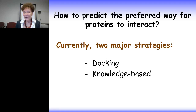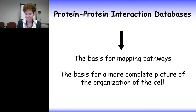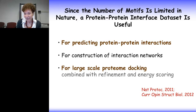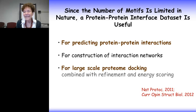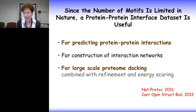The second way is knowledge-based, using protein-protein interaction databases. These databases form the basis for mapping pathways and for a more complete picture of the organization of the cell. Within this, a protein-protein interface dataset is particularly useful, because the number of motifs in single chain proteins and in protein-protein interfaces is limited in nature. Consequently, a protein-protein interface dataset is useful for predicting protein-protein interactions, for the construction of interaction networks, and for large-scale protein-protein networks, particularly when combined with refinement and energy scoring.